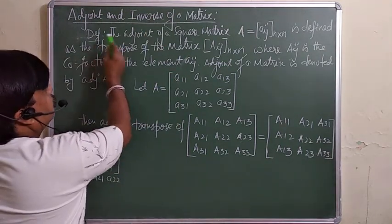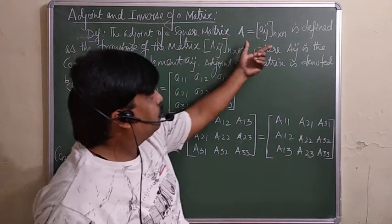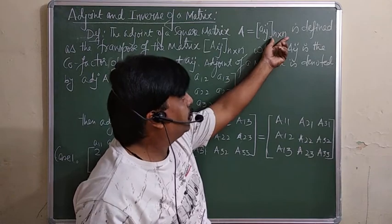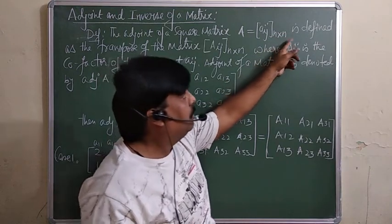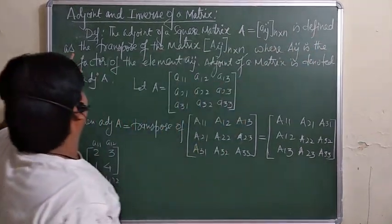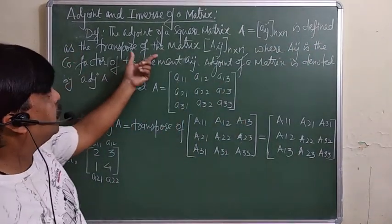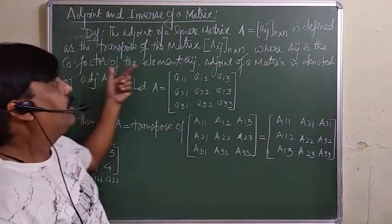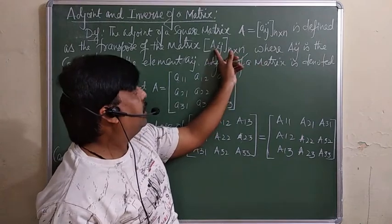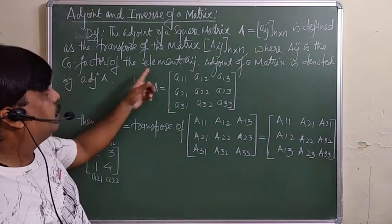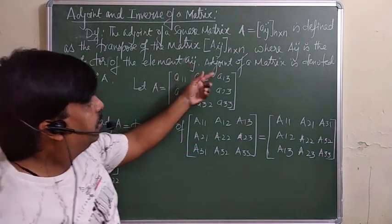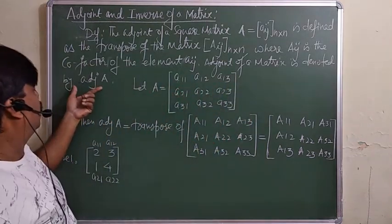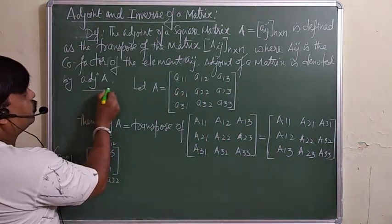The adjoint of a square matrix A (n×n, meaning number of rows and columns are equal) is defined as the transpose of the matrix of cofactors, where A_ij is the cofactor of the element a_ij. The adjoint of a matrix is denoted accordingly.